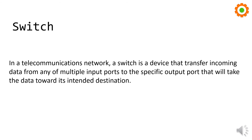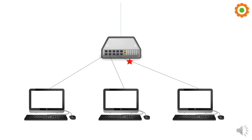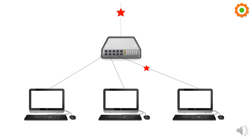Suppose this is a switch with three computers connected to it. When a data packet arrives, the switch first analyzes it to determine which node it belongs to, then redirects it to that specific node. The switch does this by storing the MAC addresses of all connected computers. Since each data packet also contains the receiver's MAC address, the switch matches both MAC addresses and forwards the packet to the correct destination.